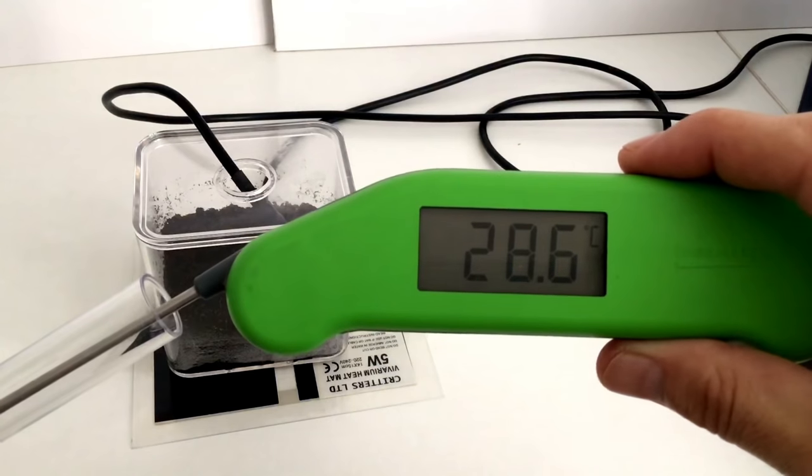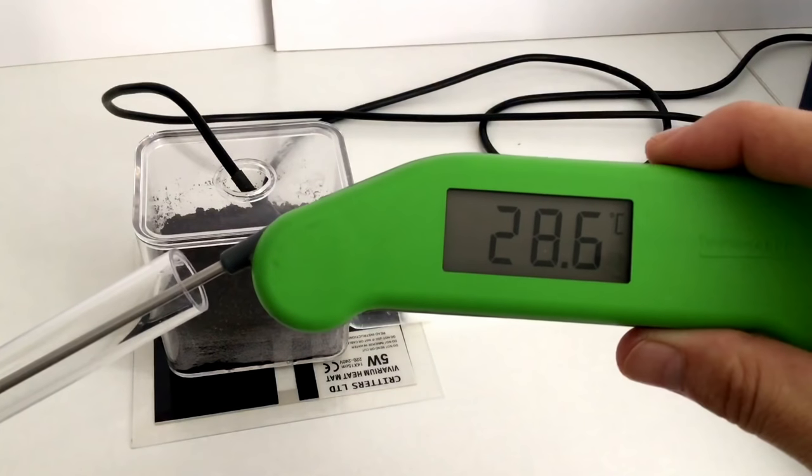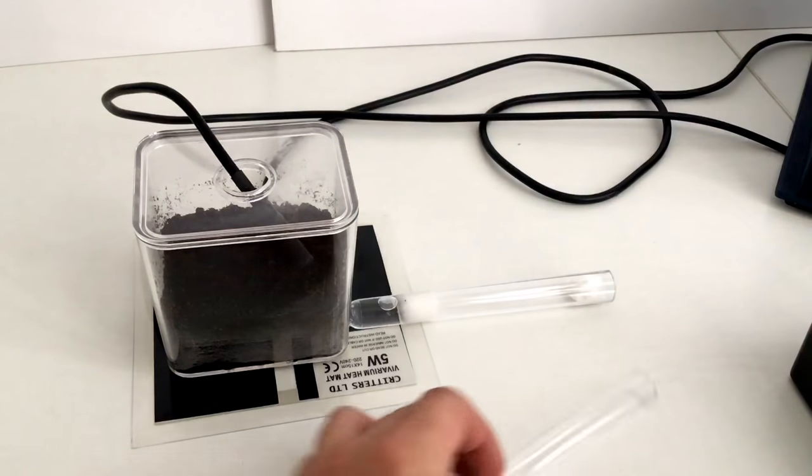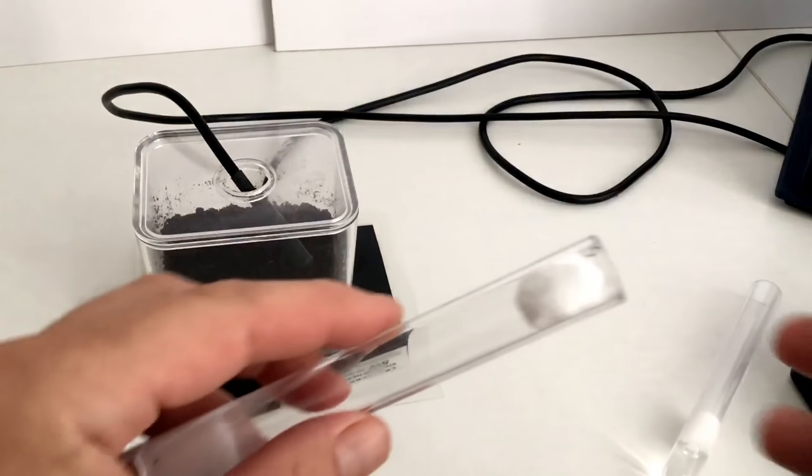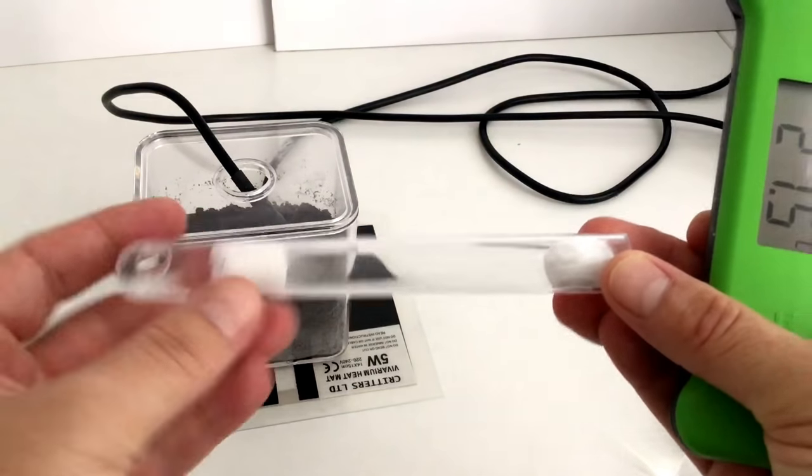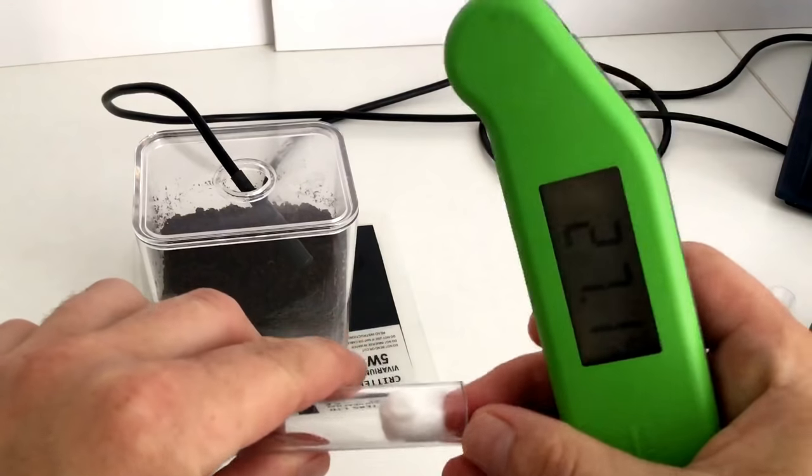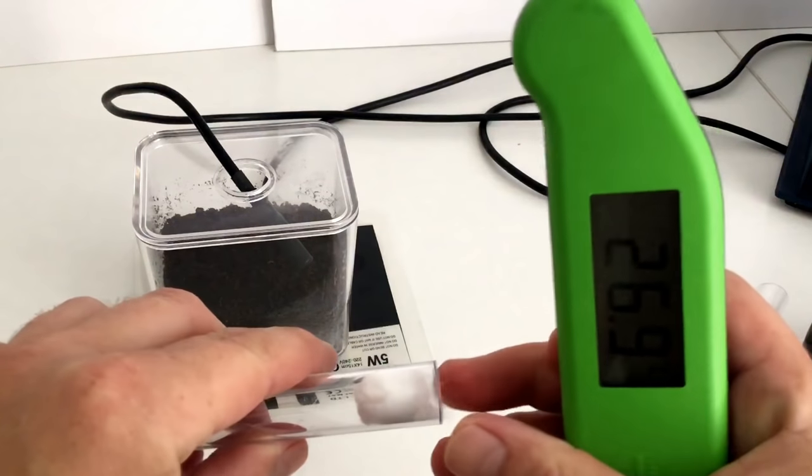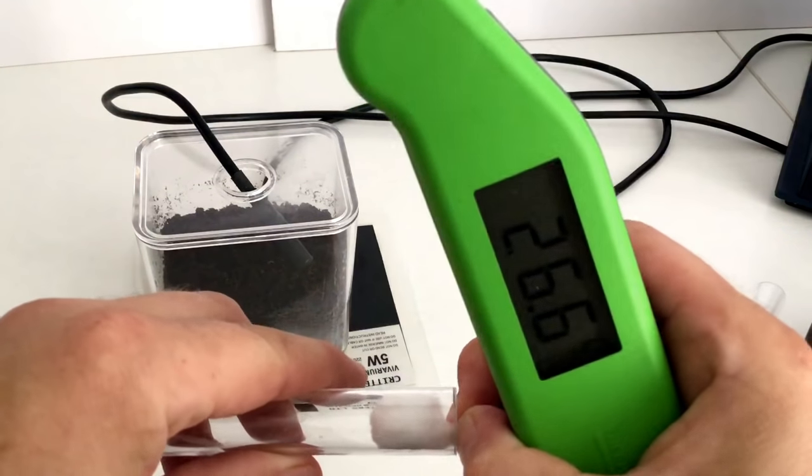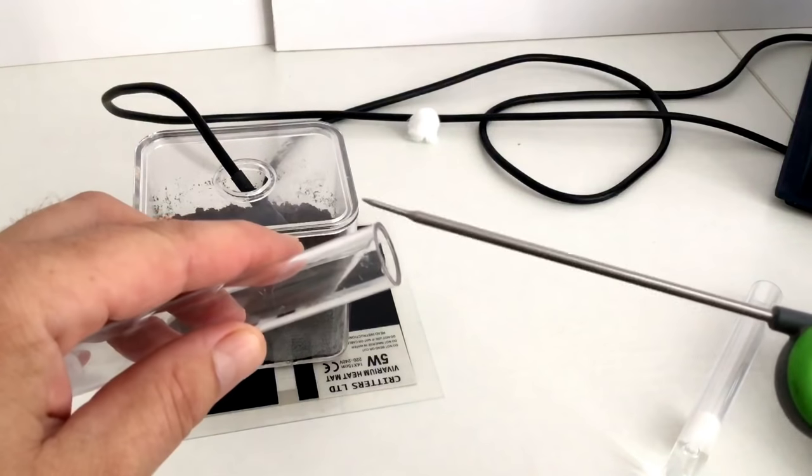So that's giving us a cotton reading of 28.6. Still very high. And it was only partially placed on there. About 1.5 centimeters on the actual heated part. So whop the cotton out of there.